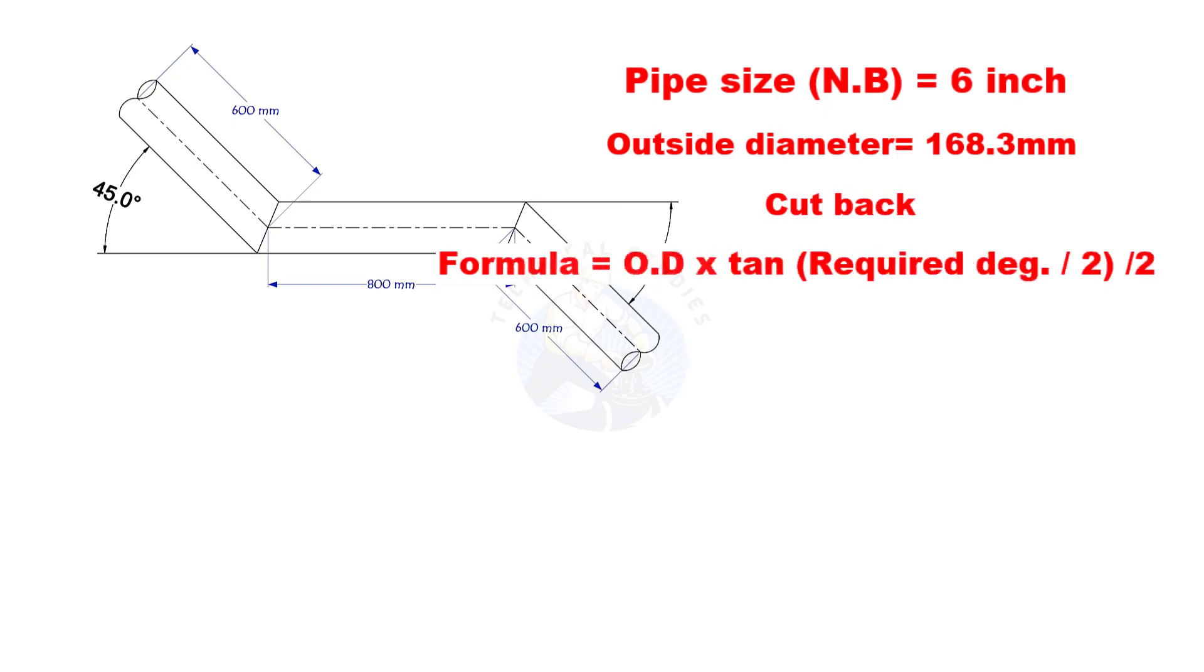Cutback is O.D. multiplied by tan half degree, divided by 2. Here, the required degree is 45. Half of 45 is 22.5.